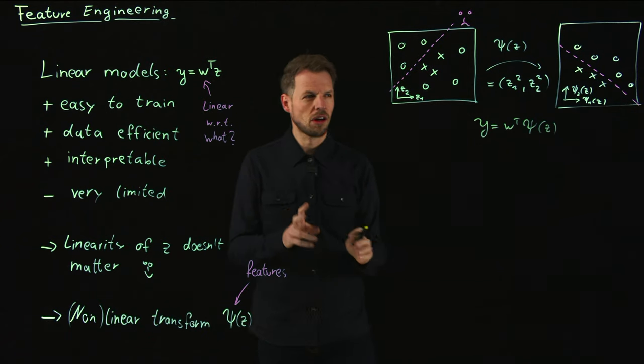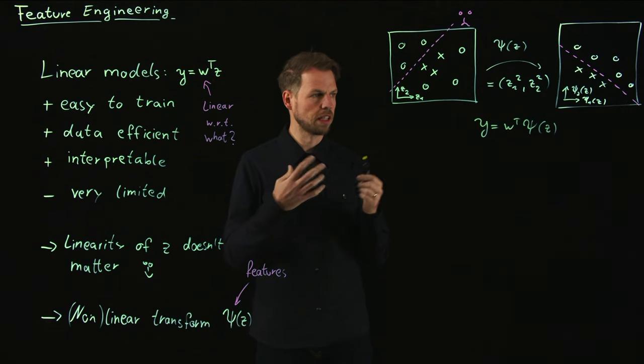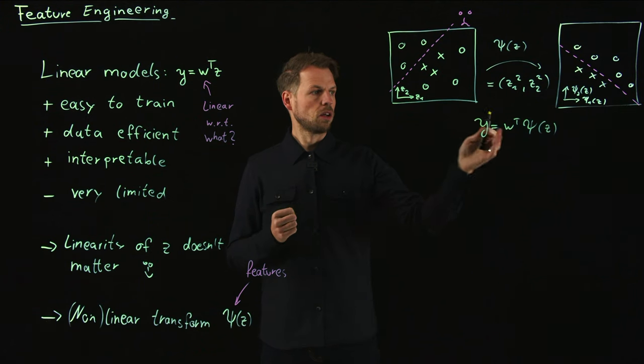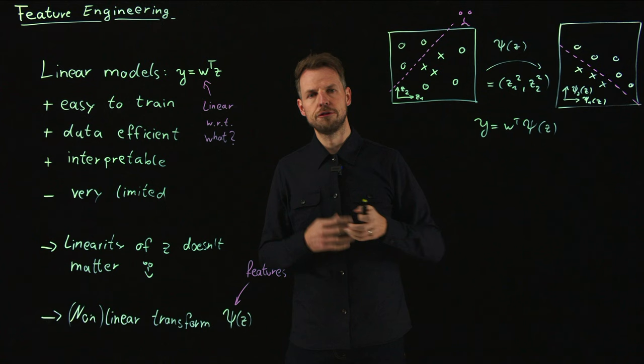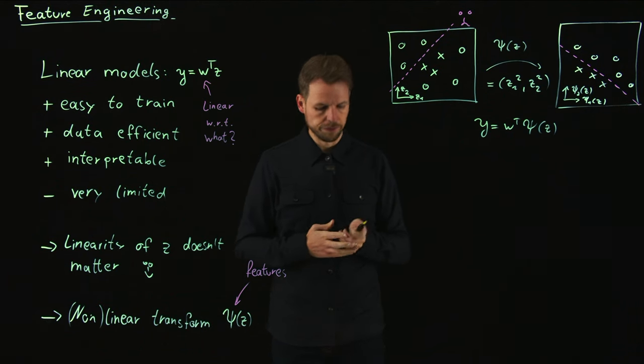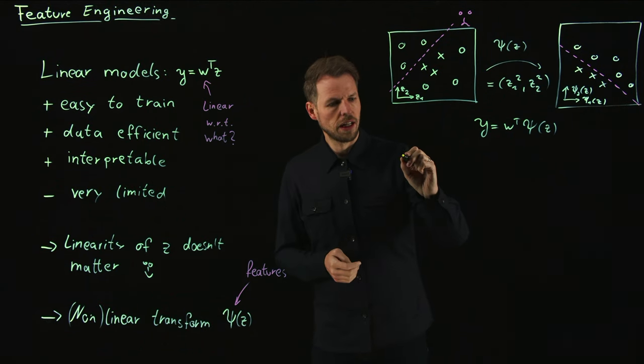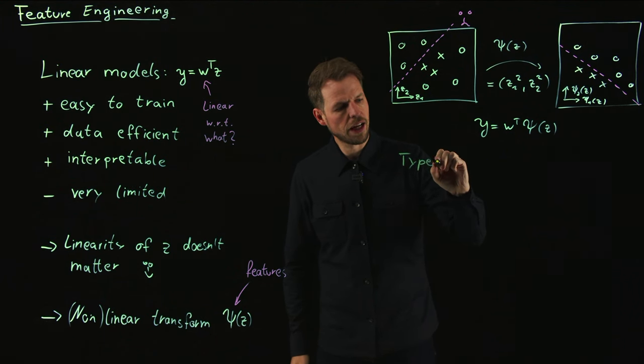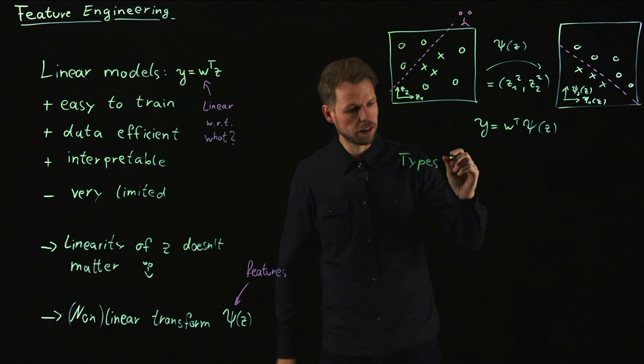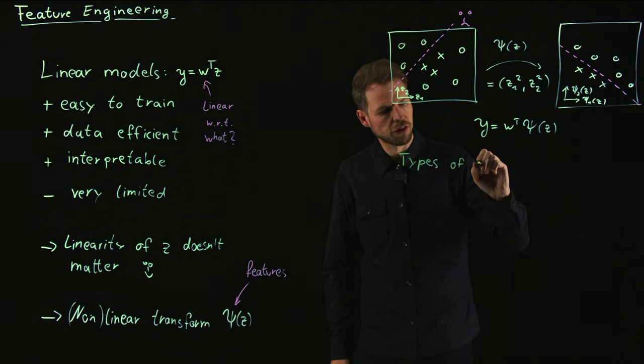So this mini-series is going to be all about these features. Y is W transposed Psi of z. The question is now how do you get these features? How do we select features in a clever way? And how can we learn something useful out of these feature transformed input data? Let's close this video with the types of features that exist.